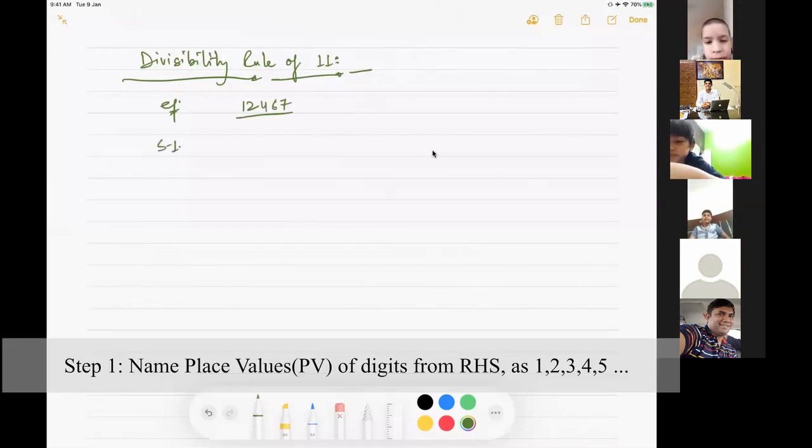Step 1. If a particular number is 12467, what are these digits? 1, 2, 4, 6, 7. We will give place values to the digits. Like 1 is the ones place, 2 is the tens place, 3 is the hundreds place, 4 is the thousands place, and 5 is the ten thousands place.